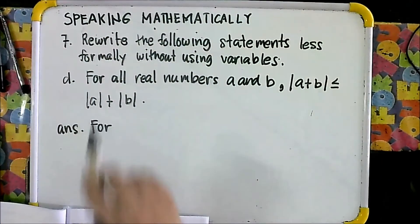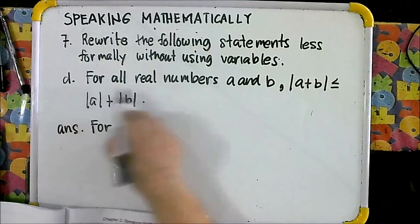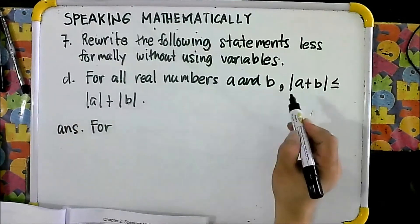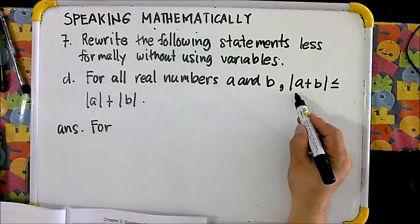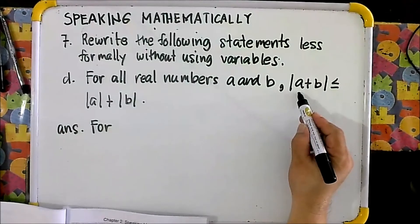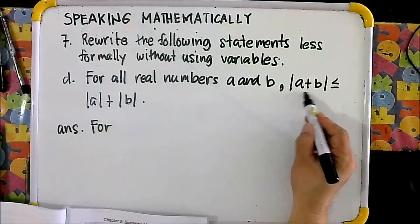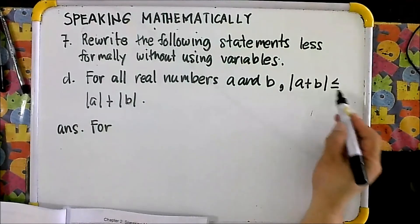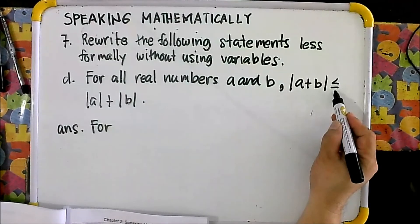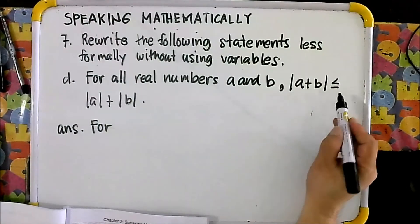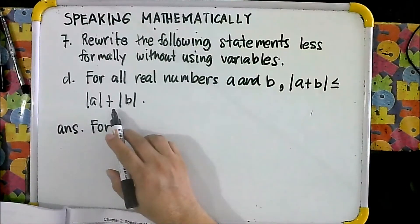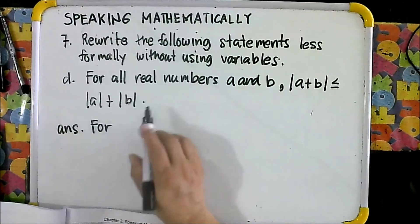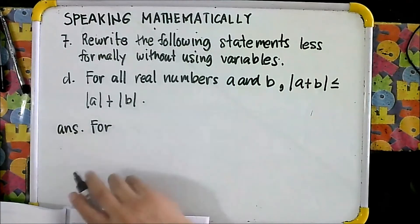For letter D: for all real numbers A and B, the absolute value of the sum of A and B is less than or equal to the sum of the absolute values of A and B. That will be your answer.